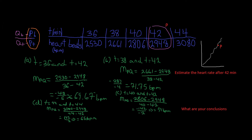Now we do part D, where t equals 42 and t equals 44 minutes. We calculate the slope of the secant line from P to Q: 3,080 minus 2,948 divided by 44 minus 42. That gives us 132 divided by 2, which is about 66 beats per minute.